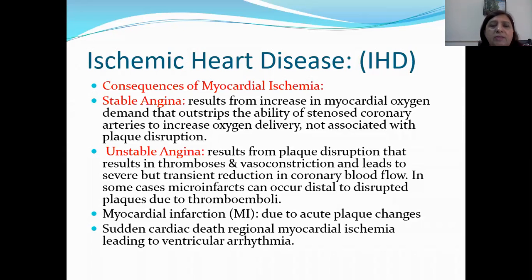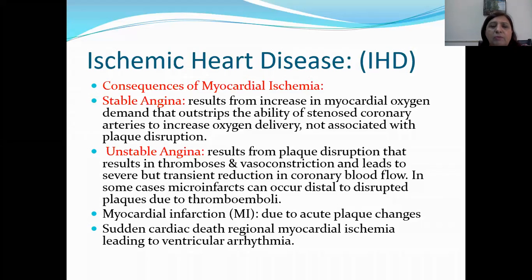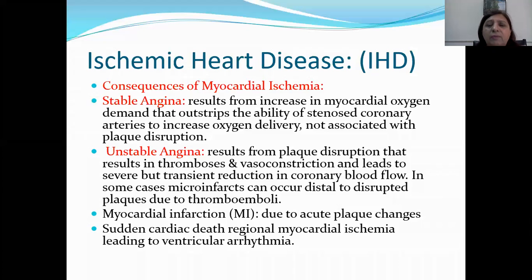Unstable angina results from plaque disruption that leads to thrombosis and vasoconstriction, causing severe but transient reduction in coronary blood flow. The plaque has superimposed pathology such as hemorrhage, rupture, or thrombosis on top of it. In some cases, microinfarcts can occur distal to the disrupted plaque due to thromboemboli.